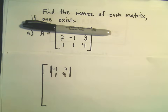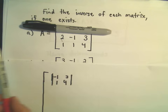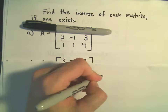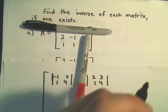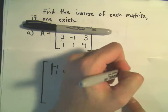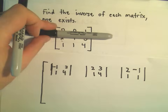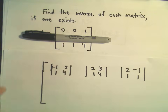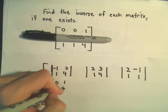If we cover up the first row and the second column, we're left with [2, 3; 1, 4]. If we cover up the first row and the last column, we're left with [2, -1; 1, 1]. Then if we cover up the second row and the first column, we're left with [0, 1; 1, 4].